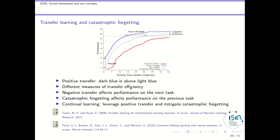To distinguish negative transfer from catastrophic forgetting: negative transfer affects performance on the next task, while catastrophic forgetting affects performance on the previous task — you train on a new task and forget what you learned on the prior one. There is a field called continual learning, or lifelong learning, which consists in leveraging positive transfer and mitigating catastrophic forgetting, and there is a well-known survey of this domain.